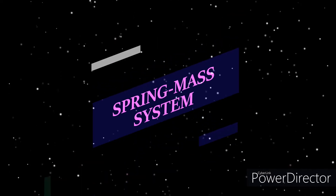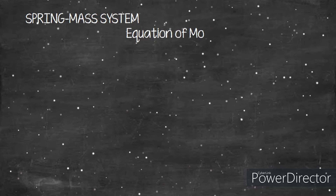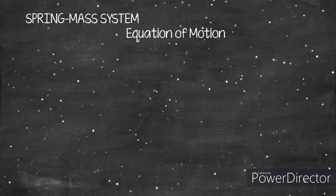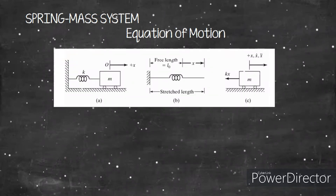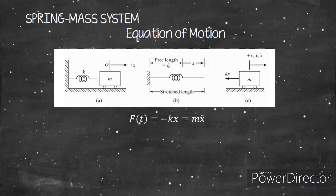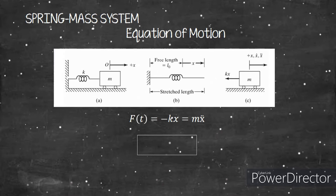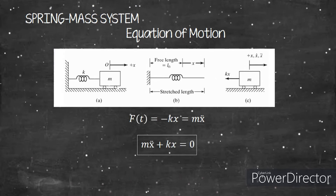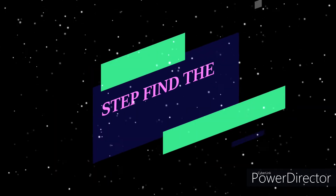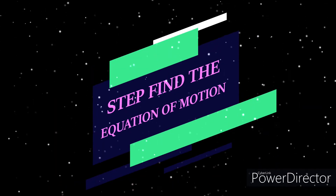A spring-mass system is one example of a system that works on linear motion. From the video, we can see a spring attached to a body mass. The spring and the body mass both have their own forces acting, which we can express using Newton's Second Law.